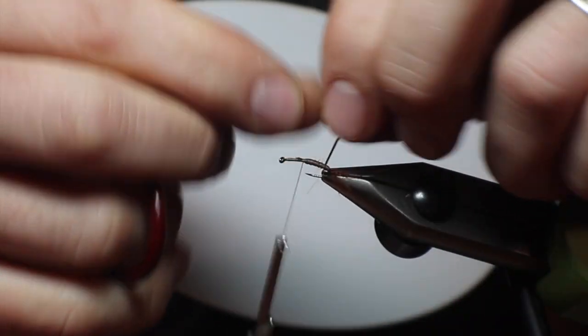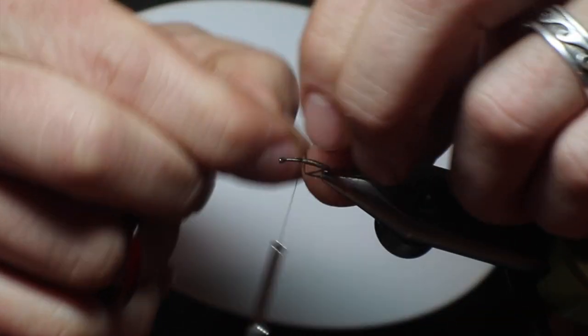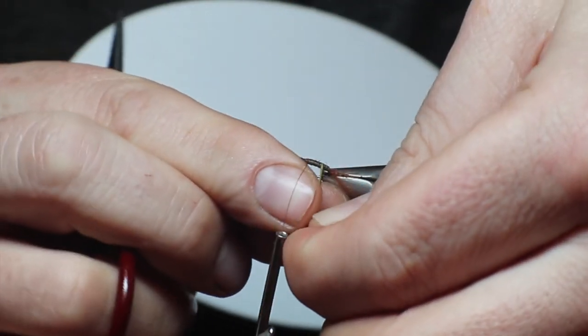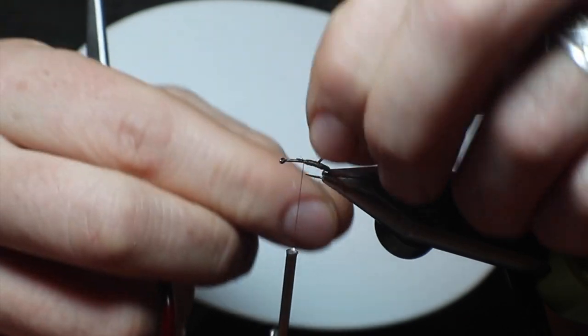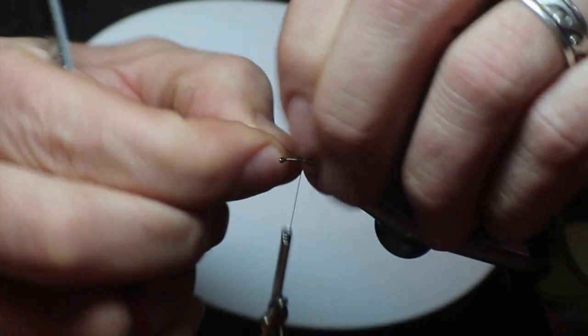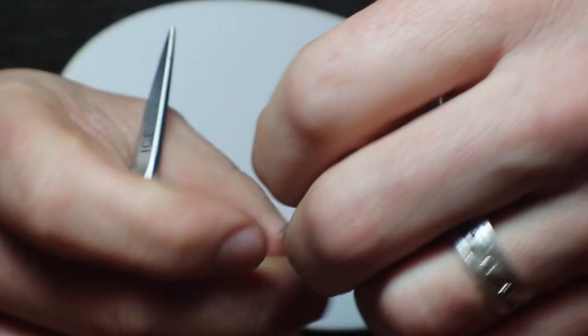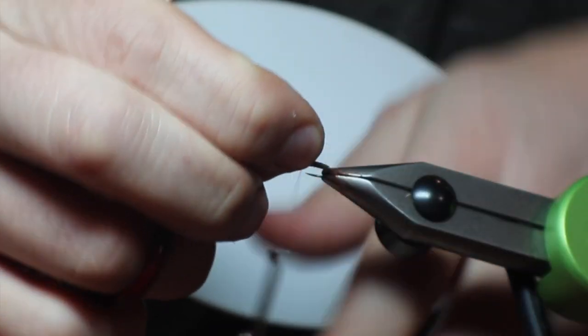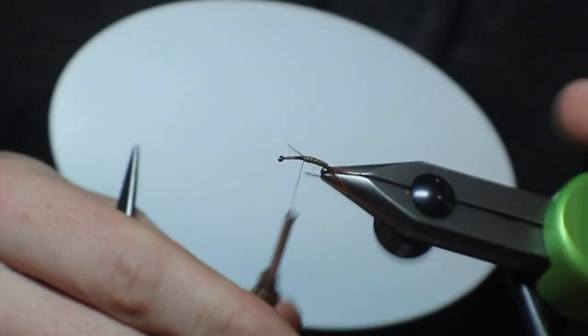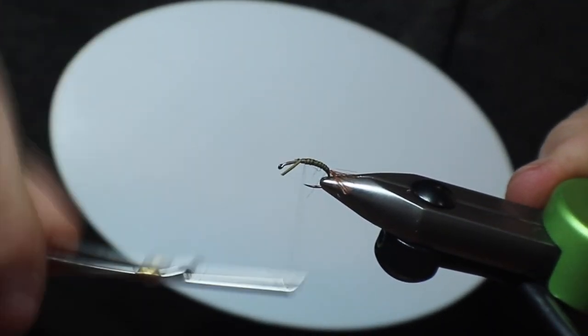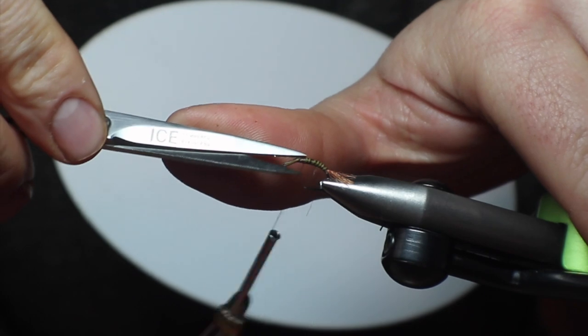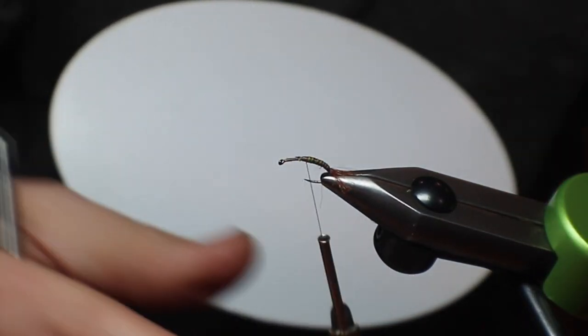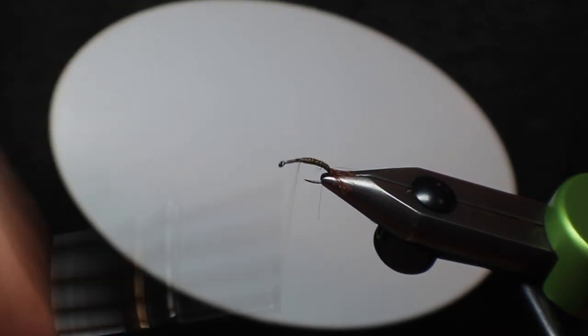If not, we'll go in and clip them. This is a great step to use hackle pliers, but as often happens I don't, so I'm just using my fingers to force it into position. I'm tying it down. I do like that to look segmented, and both the biots and the post will do a good job of that.